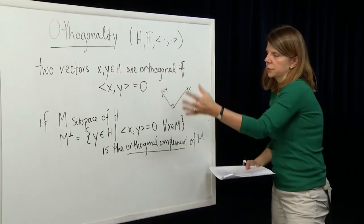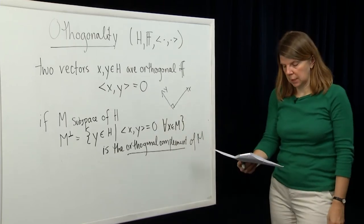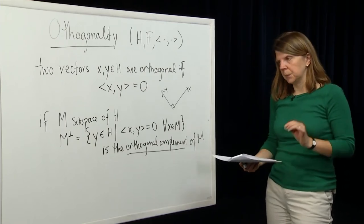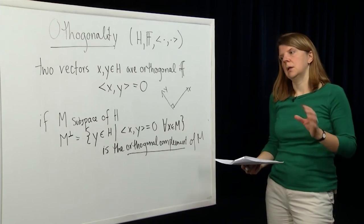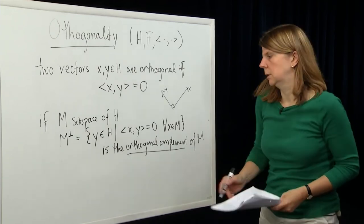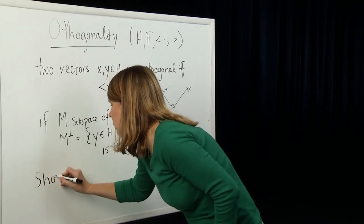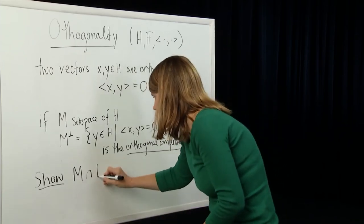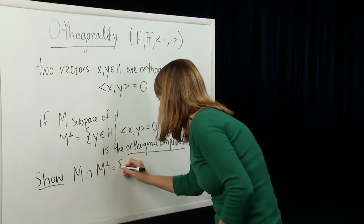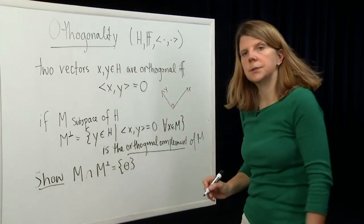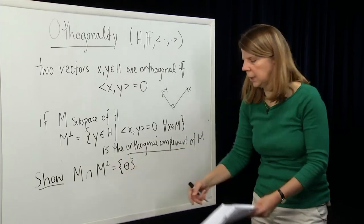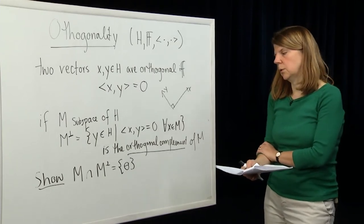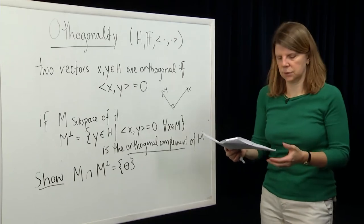So we have orthogonality of vectors and orthogonality of subspaces. We can show, just from this definition, that the only intersection between M and its orthogonal complement is the zero vector: M intersect M-perp equals {0}. We would show that in the style we would use to show uniqueness — suppose we had a vector x in that intersection which is not equal to 0.